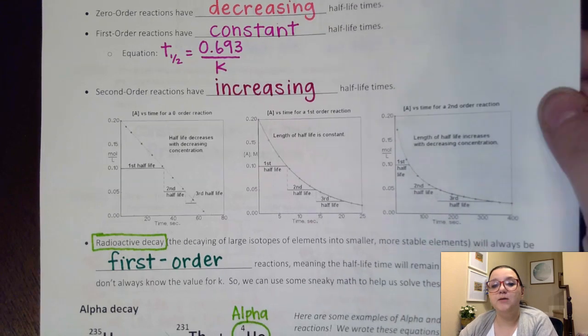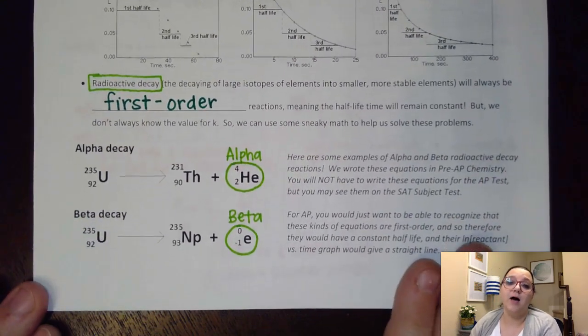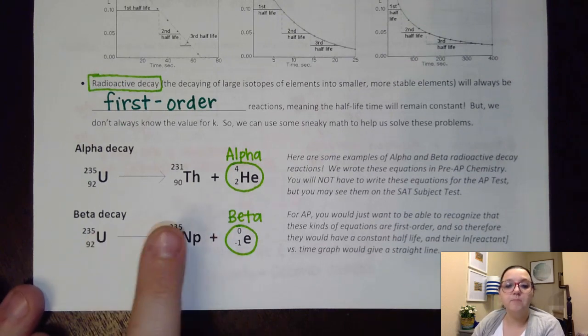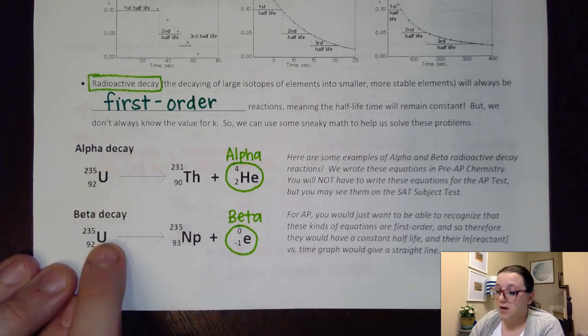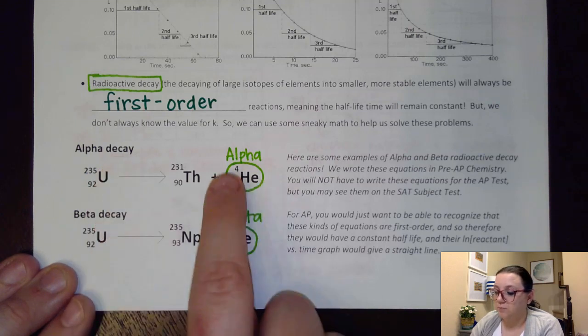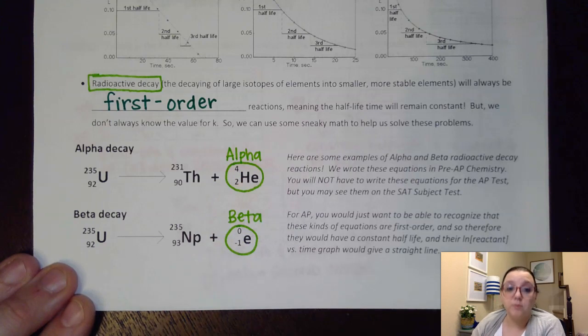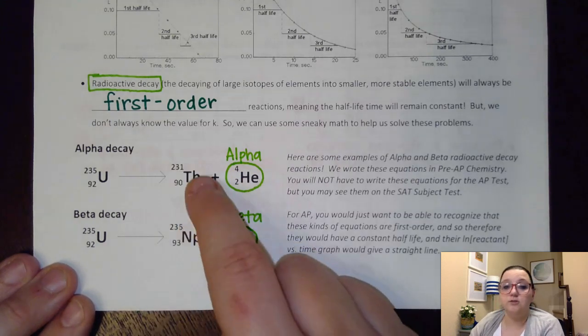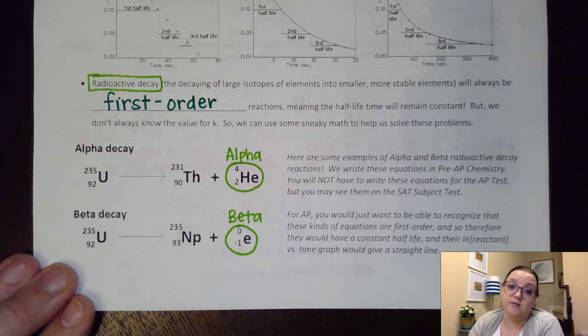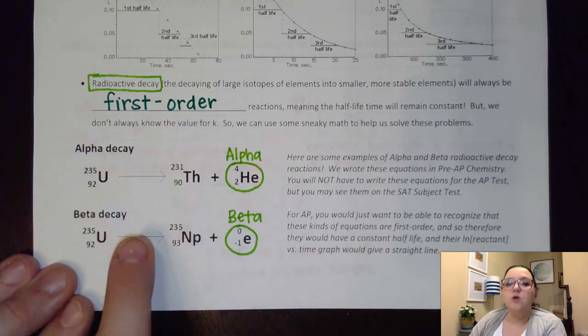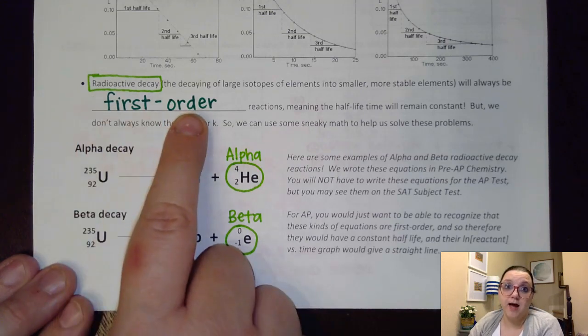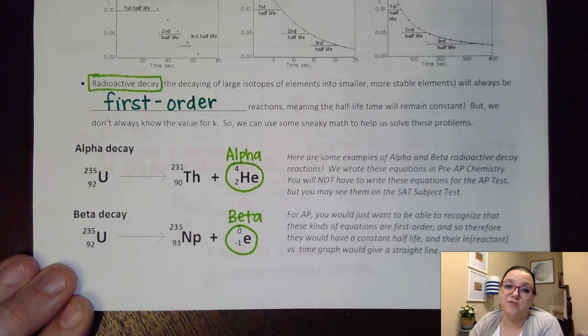Now, another place that we see using this a whole bunch is when we're talking about radioactive decay. These equations might look familiar from pre-AP chemistry. This is where we are taking some sort of isotope that's very large and undergoing a decay process, either with an alpha particle or a beta particle or some other kind of particle being released. And so that transforms our isotope into a brand new isotope, often a totally different element than what we had before. So here's the key thing for these kinds of processes. Radioactive decay is always a first-order reaction, which means it's going to have a constant half-life time throughout the course of the reaction, which is going to be very useful, as you'll see here in a few minutes, when we're trying to do certain types of calculations.